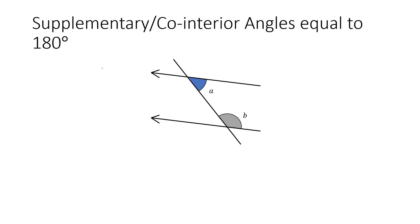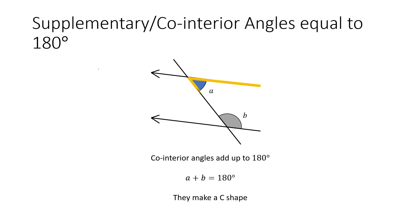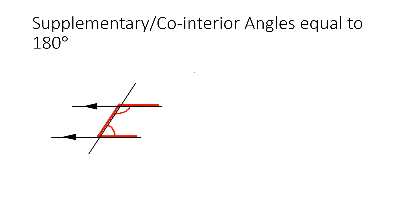The final type is called a supplementary or co-interior angle, and they add up to 180 degrees. Your inside angles, when added together, will equal 180. So A plus B equals 180. The way to identify a co-interior angle is that it makes a C shape — angles inside your C added together equal 180. Here are a couple more examples of how they might look, including a backward C.